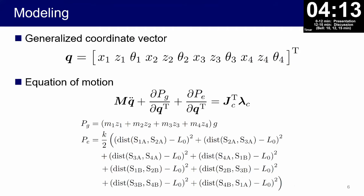Modeling: by setting the generalized coordinate vector q, which includes x1, z1, theta1, and finally x4, z4, theta4, the robot has totally 12 DOF. The robot equation of motion becomes like this. Here Pg and Pe are respectively the potential energies by gravity and elasticity. Jc is a Jacobian matrix determined according to the ground contact conditions.